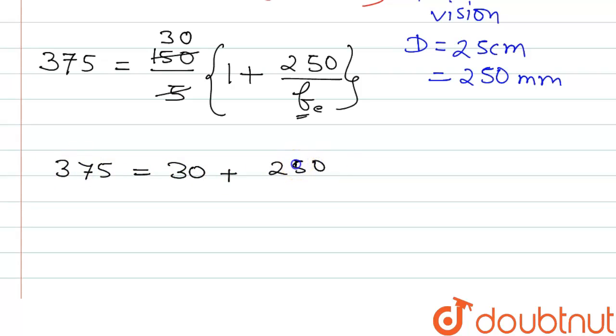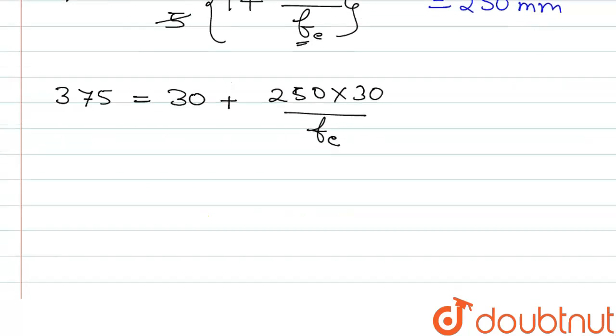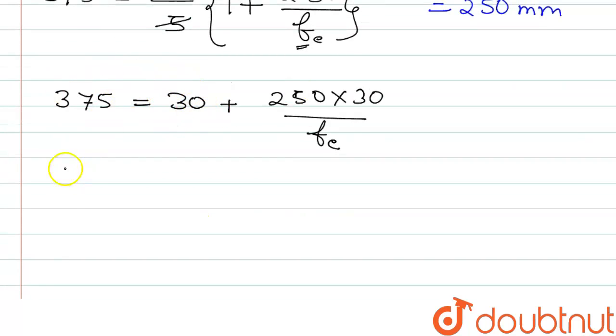250 into 30 divided by fe. If we take 30 to the other side, we can write 375 minus 30 equal to 250 into 30 divided by fe.